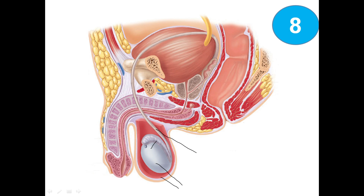Now we identify the three accessory glands of the male: the seminal vesicle, the prostate, and the small bulbourethral gland, also known as Cowper's gland. This one is the ejaculatory duct. This part is the urethra, which includes the prostatic urethra, membranous urethra, and the spongy or penile urethra.